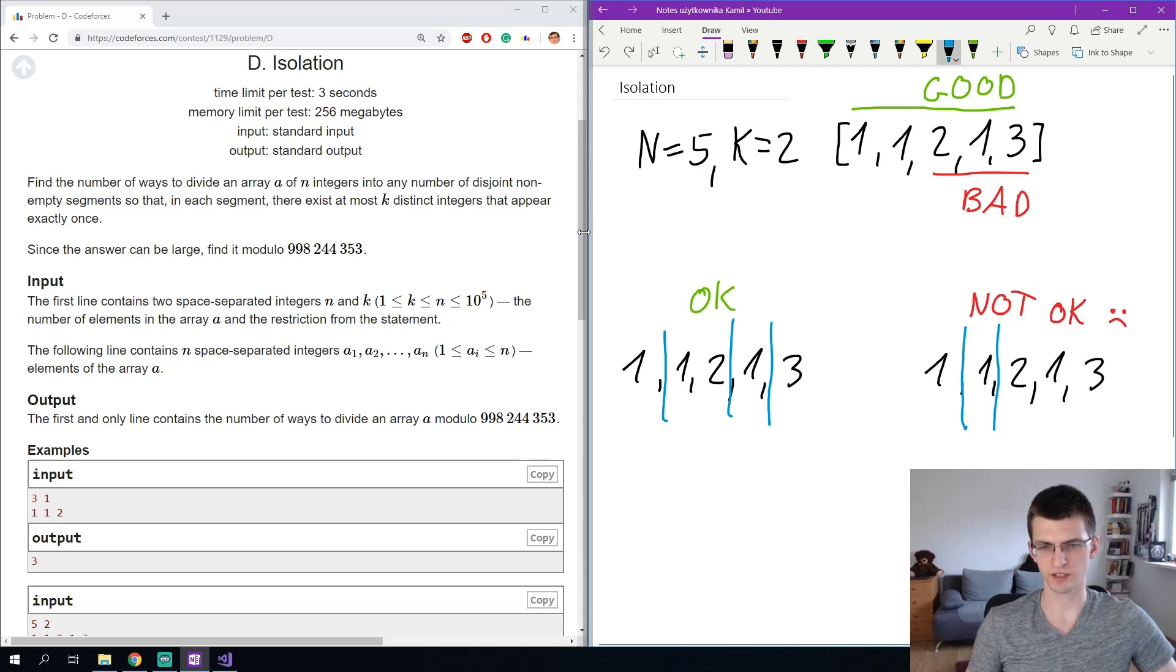Below that you can see one correct way to split the given sequence and on the right an incorrect way because the last segment is bad, has more than k unique numbers. The task is to print the answer, the number of ways to split the sequence modulo big prime number and n is up to 100,000.